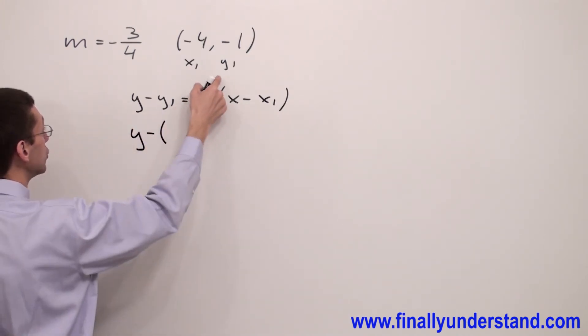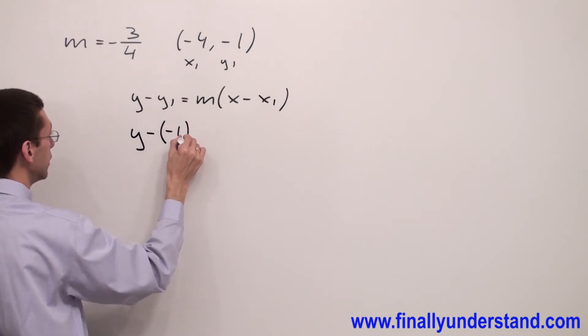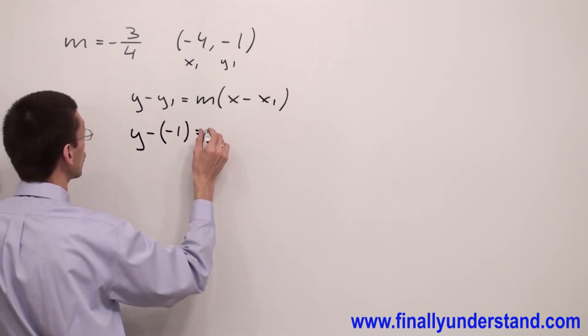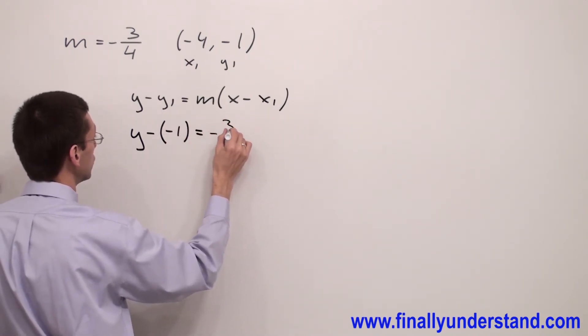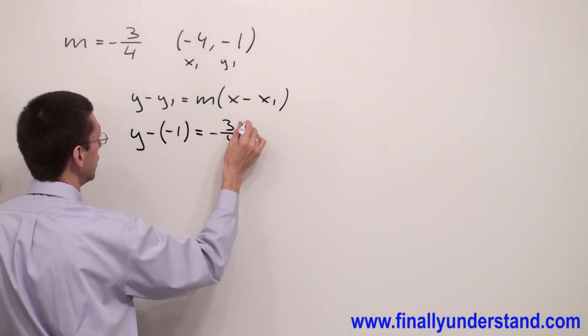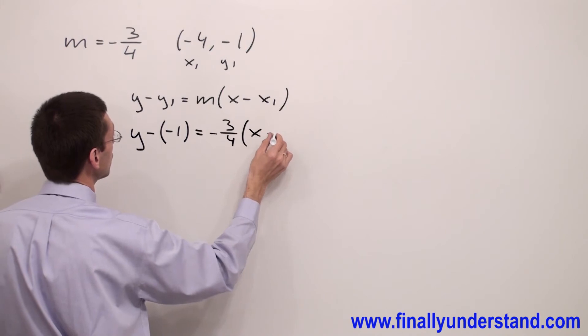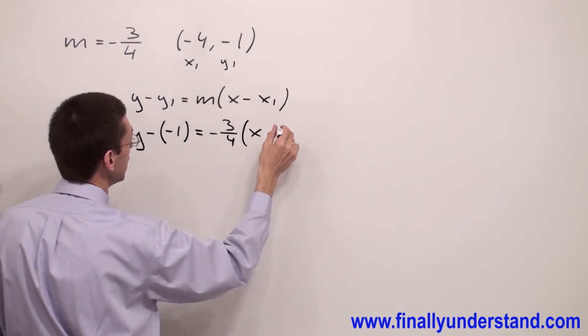So y minus y1 is equal to negative 1, equals slope negative 3 over 4 times x minus x1, which is equal to negative 4.